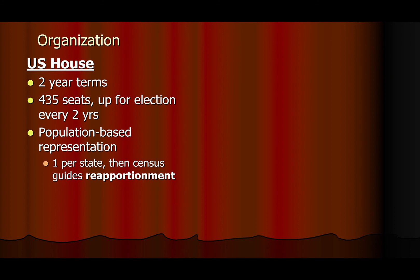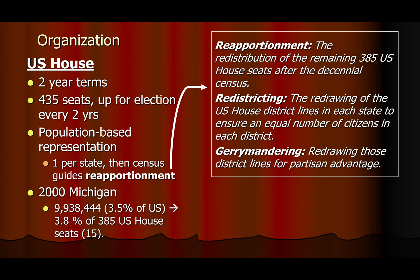The first stage has to do with what's called reapportionment. Reapportionment is the redistribution every 10 years of those 385 seats, so that if population shifts occur, states that now have relatively more population gain seats, and states that relatively lose population lose representation. The process within each state of redrawing US House district lines is called redistricting. So reapportionment is the redistribution of seats, and redistricting is the redrawing of US House district lines.